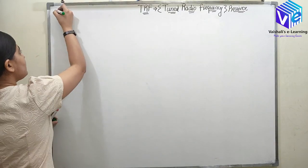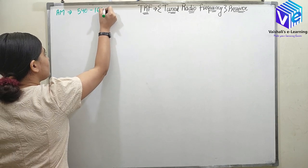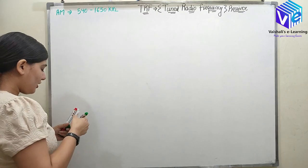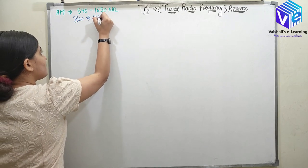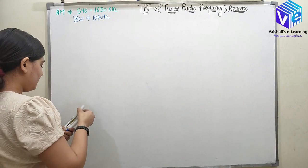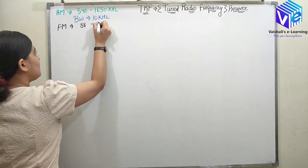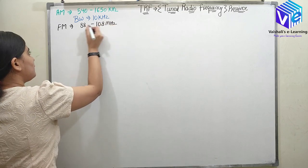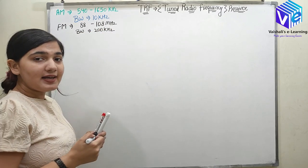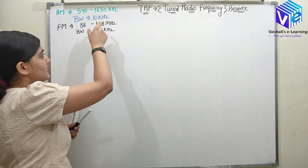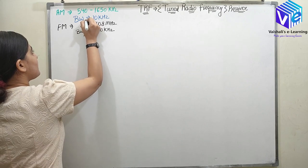TRF is an AM receiver, so it operates on the AM spectrum of 540 to 1650 kilohertz. The bandwidth of one AM signal is 10 kilohertz. For FM, the frequency spectrum is 88 to 108 megahertz and the bandwidth is 200 kilohertz — meaning FM bandwidth is 20 times the bandwidth of AM.